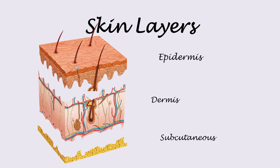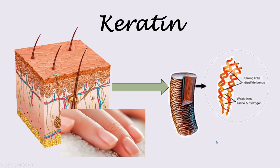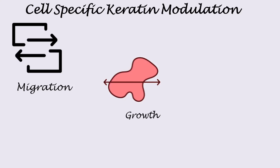Keratin is a type of protein found on epithelial cells which line the inside and outside surfaces of the body. They help form the tissues of the hairs, nails, and the outer layers of the skin. They have the main function of keeping all the structures and cells together and they mainly consist of cysteine. Keratin modulation in the cells consists of three main important steps: migration, growth, and adhesion.